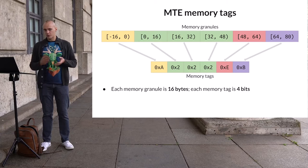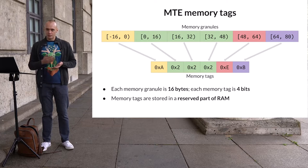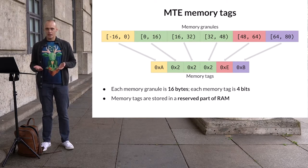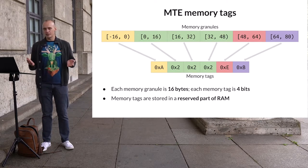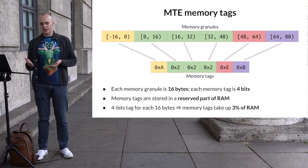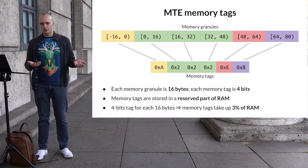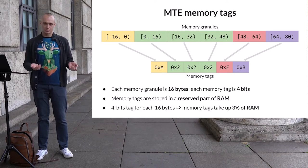But where are these memory tags stored? Unlike with pointers, we don't have any spare bits for that. It turns out MTE uses a dedicated RAM region to store memory tags. This region is reserved during CPU boot, and reserving a part of RAM means it will not be accessible for normal usage — basically, this RAM region becomes invisible for the system. Since we have one 4-bit memory tag for every 16 bytes of RAM, MTE effectively decreases the size of RAM by about 3%.